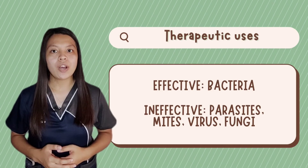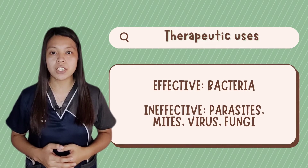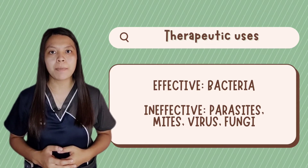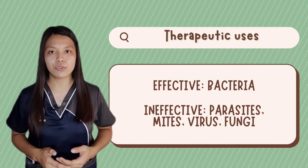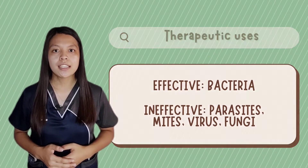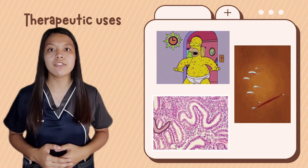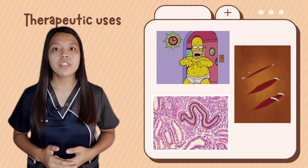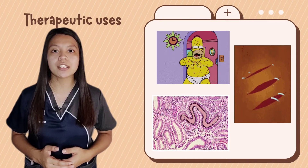For its therapeutic uses, compared to other antibiotics, chloramphenicol can be effective only against bacterial infections, and not infections caused by parasites, mites, viruses, or fungi. This antibiotic is typically used to treat skin infections, wound infections, bone infections, and intestinal tract infections.